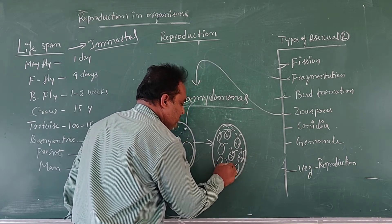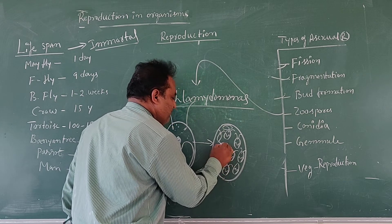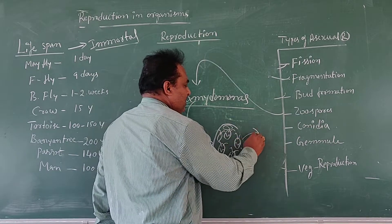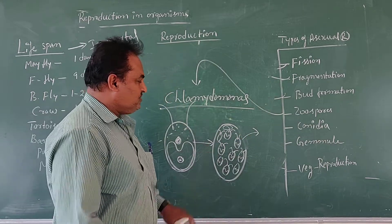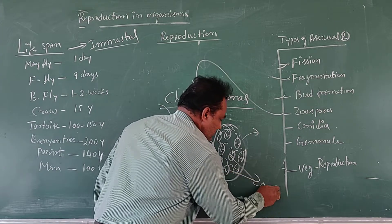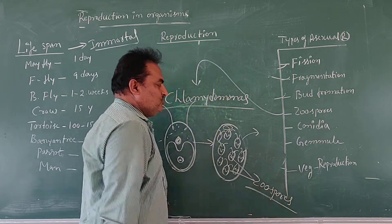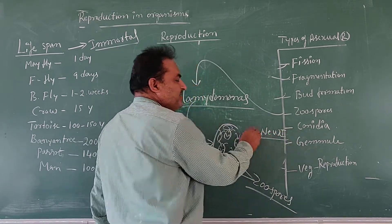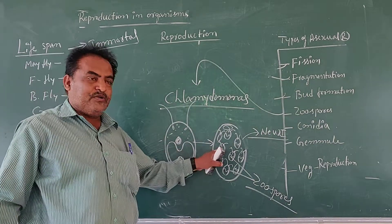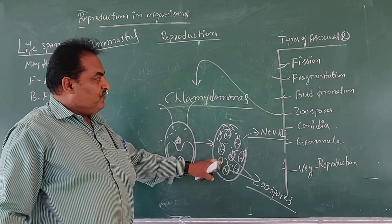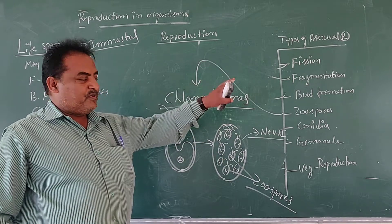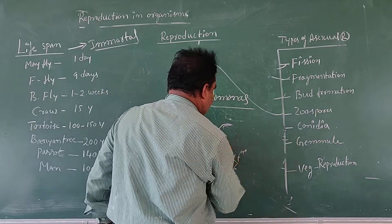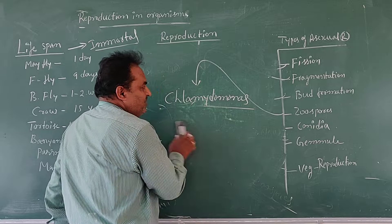After the development of zoospores, the wall of Chlamydomonas is burst open and all the spores are released out. These spores are called zoospores. The released spores develop into new individual organisms. Since there is involvement of gametes, it is also considered a sexual reproduction.